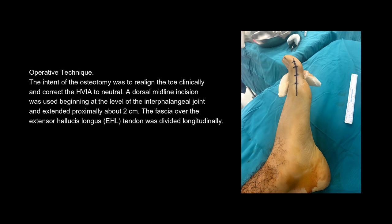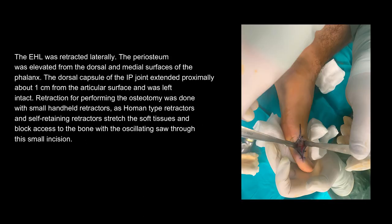Operative technique. The intent of the osteotomy was to realign the toe clinically and correct the HVIA to neutral. A dorsal midline incision was used beginning at the level of the interphalangeal joint and extended proximally about 2 cm. The fascia over the extensor hallucis longus tendon was divided longitudinally, and the EHL was retracted laterally. The periosteum was elevated from the dorsal and medial surfaces of the phalanx. The dorsal capsule of the IP joint extended proximally about 1 cm from the articular surface and was left intact. Retraction was done with small handheld retractors, as HOMON-type and self-retaining retractors stretch the soft tissues and block access to the bone through this small incision.